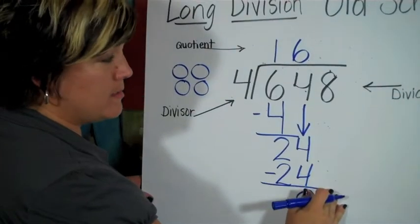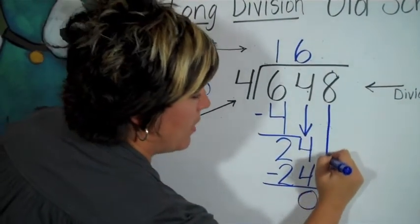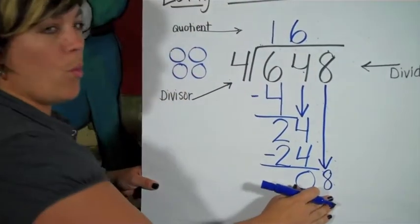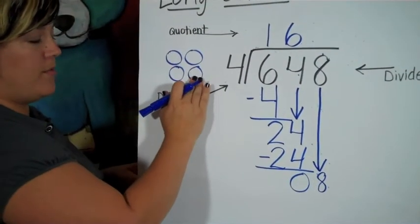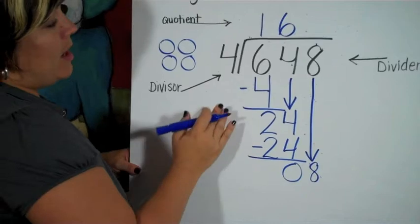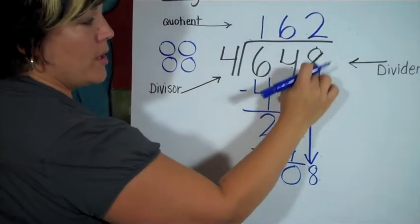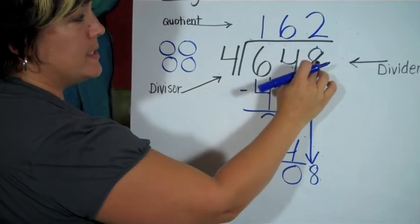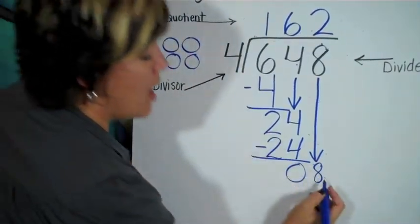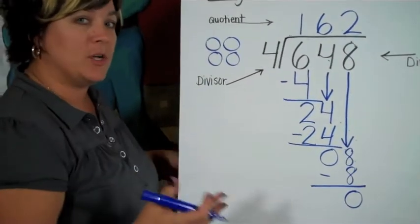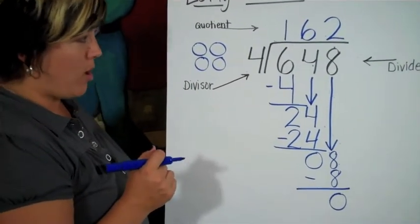So the next place value is my ones. I'm going to bring that one down. I have eight ones left to put into these four groups. I'm going to say, if I put two in each group, which is why it goes over the ones column, two ones in each group, I've used eight of my ones. When I subtract I get zero, and so I don't have a remainder on this particular problem.